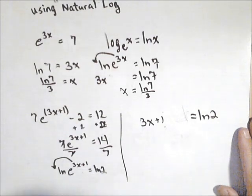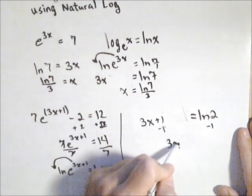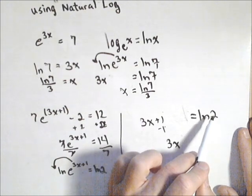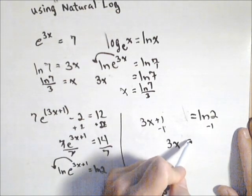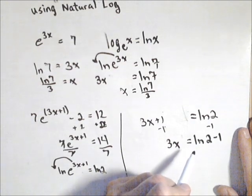And I would leave that as ln of 2. We're going to find a nice exact answer. If we want a decimal, we can always find that at the end. Subtract 1 off both sides. So we get 3x. This 1 does not subtract from the 2. I see that mistake made a lot. It's actually going to be ln of 2 minus 1. ln of 2 is its own number.